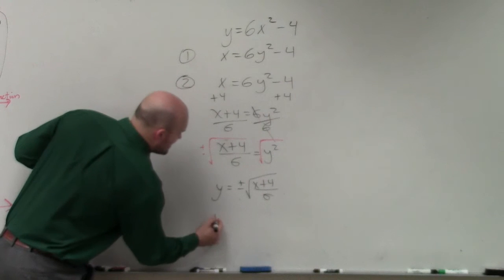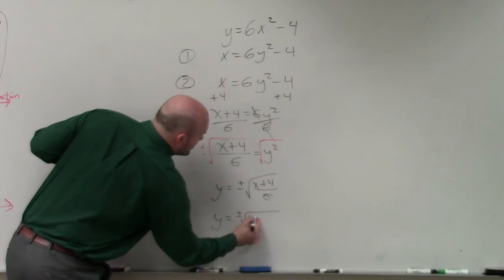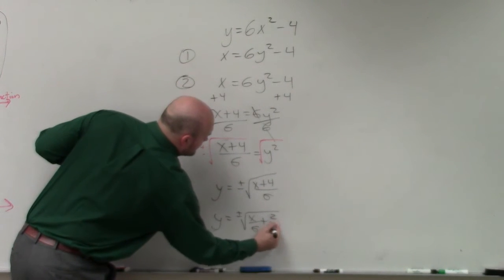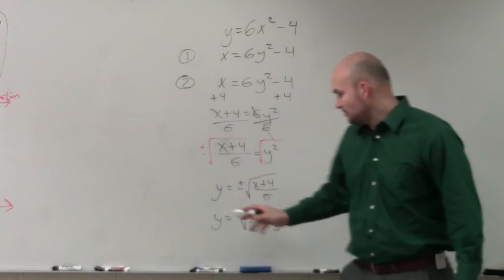You could also write this as y equals plus or minus the square root of x over 6 plus 2 thirds. You could divide the 6 into both of those.